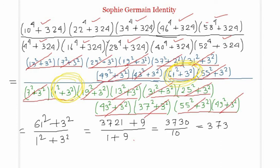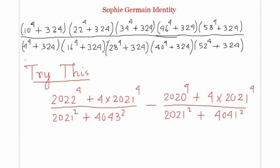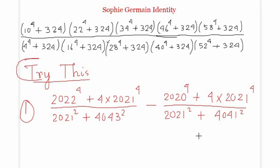Now it is time to solve one question on your own. The question is given under the heading 'Try This': evaluate [2022⁴ + 4·2021⁴] ÷ (2021² + 4043²) minus [2020⁴ + 4·2021⁴] ÷ (2021² + 4041²). Hope you all liked this video. Thank you for watching — please subscribe to our channel and share this video.